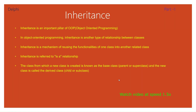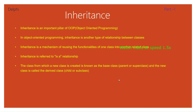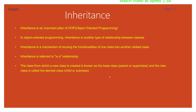In this video we are going to discuss inheritance in Delphi — what it is and how it works. Inheritance is an important part of the OOP concept in Delphi. In object-oriented programming, inheritance is a type of relationship between classes. It is the mechanism of reusing the functionality of one class in another class. Inheritance is referred to as the 'is-a' relationship, which we will see later.